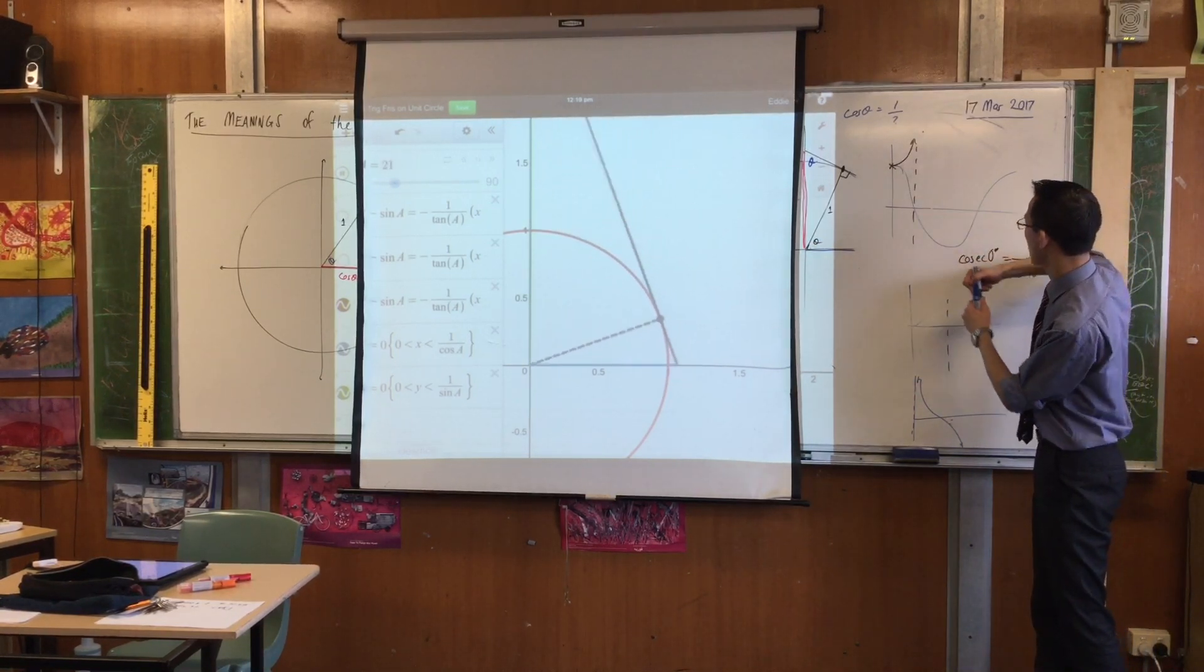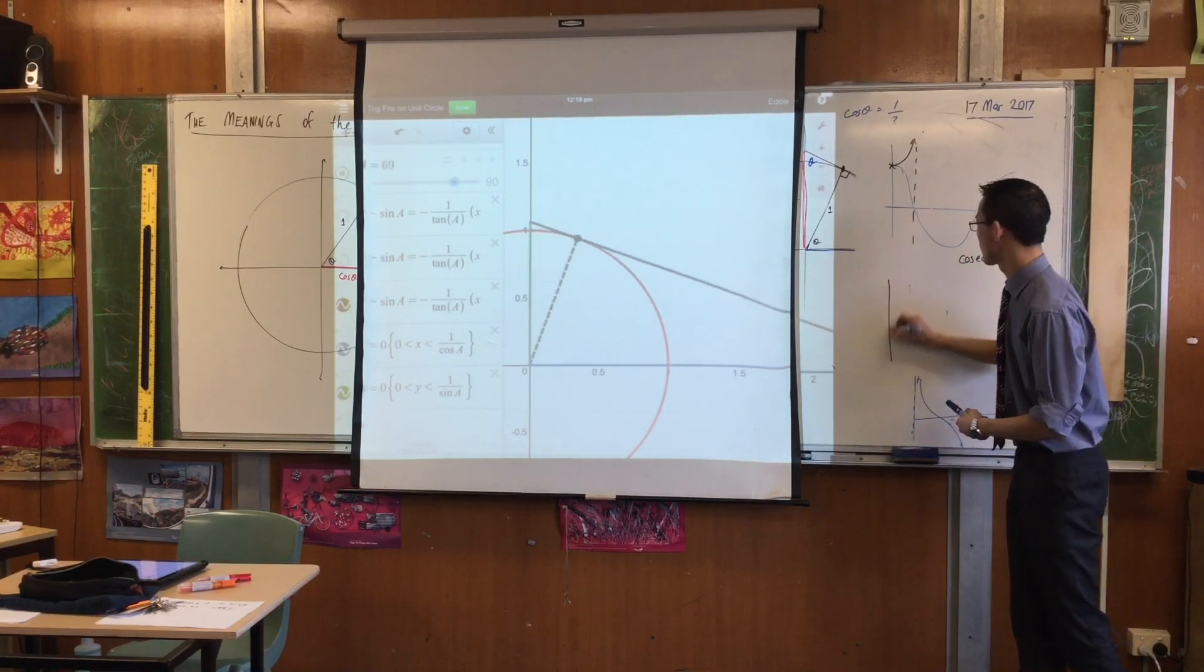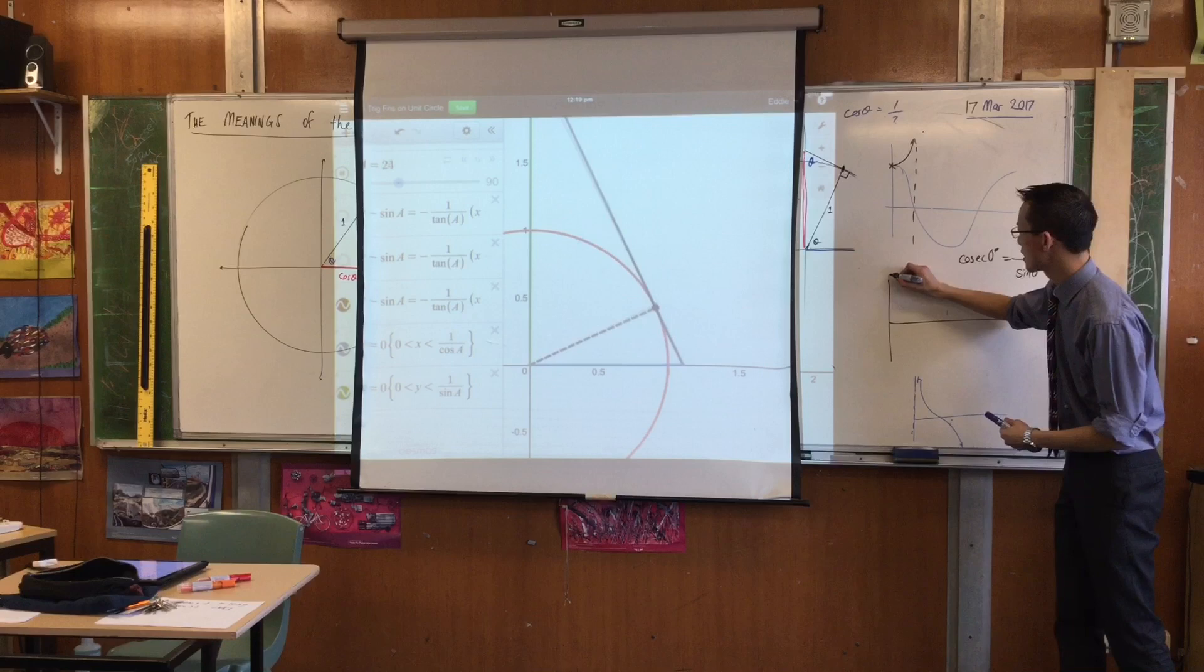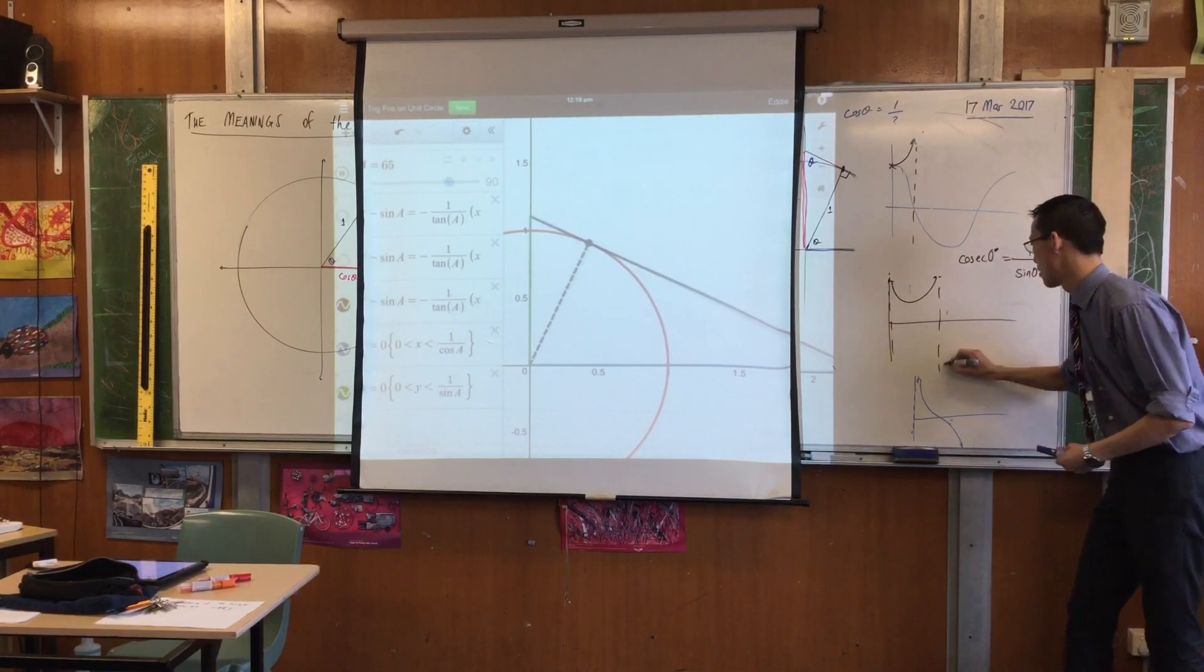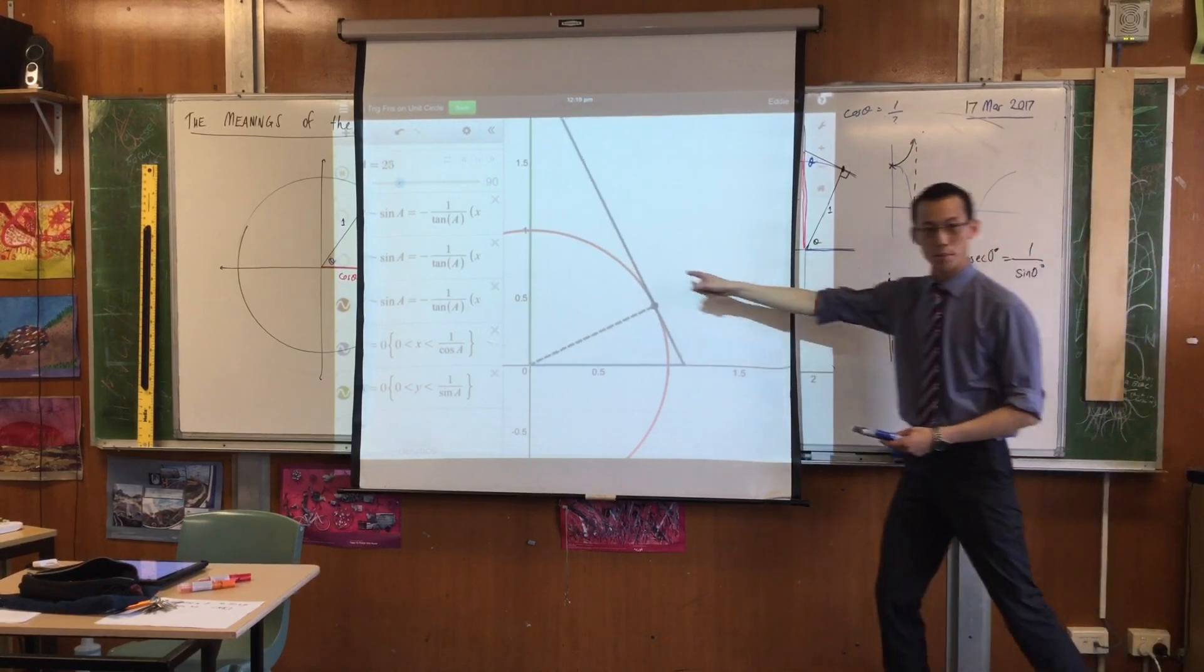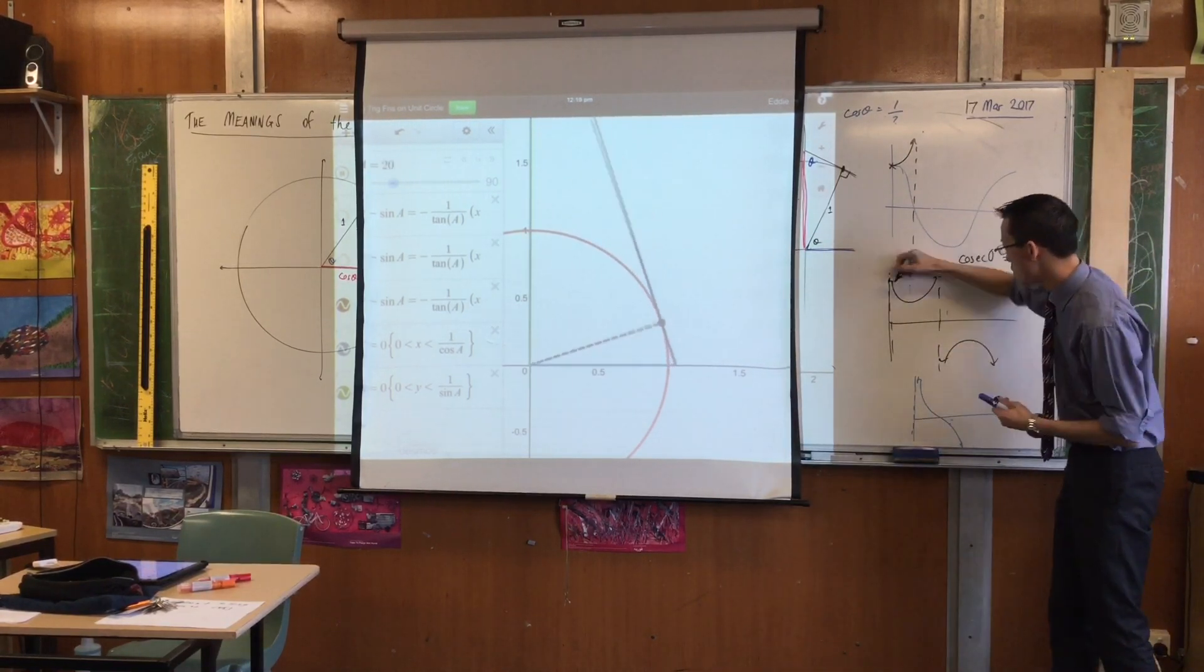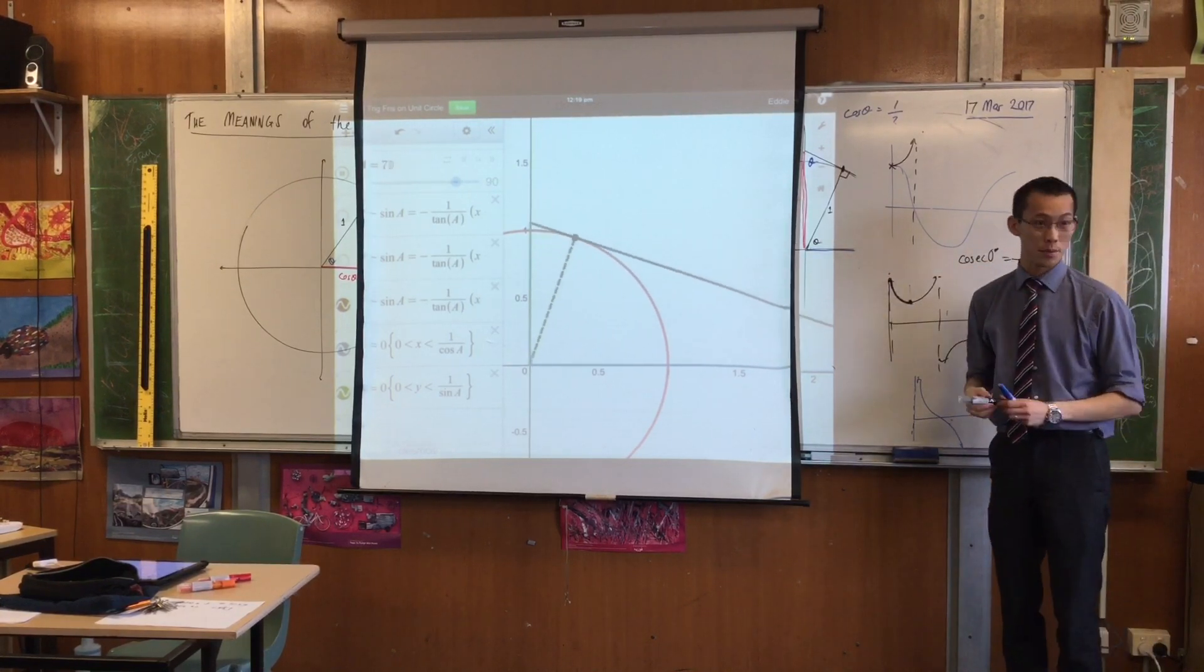The cosec graph looks like this. Let's put it over here. It's got its asymptote there. And it looks like that. Do you remember this one? That's cosec. Do you remember? Do you see, as I move between 0 and 90, I'm moving between here and here. That's the little part I'm moving between.